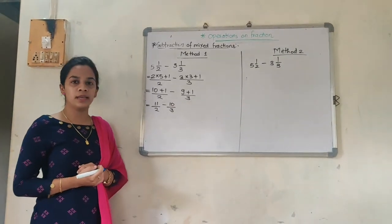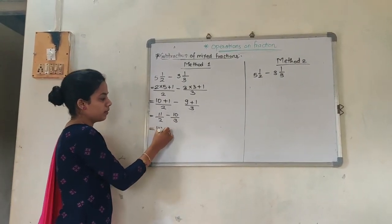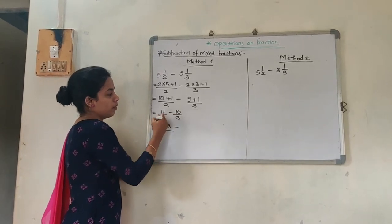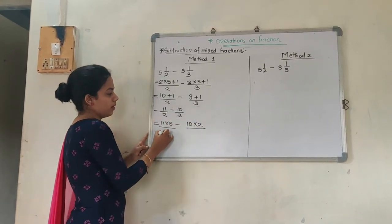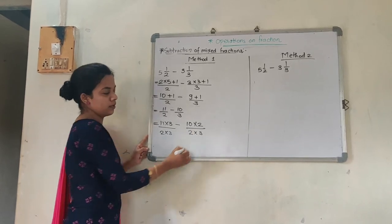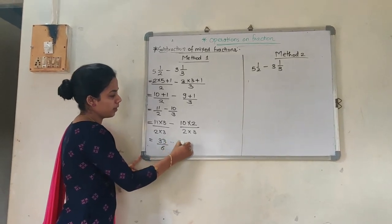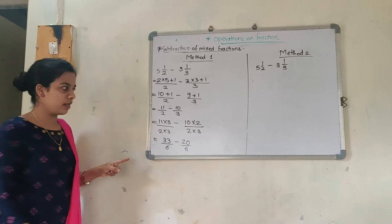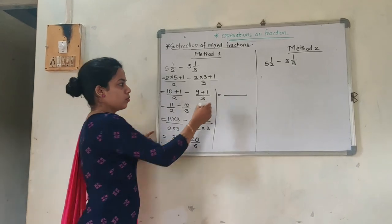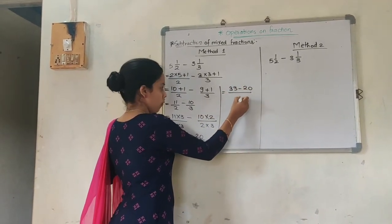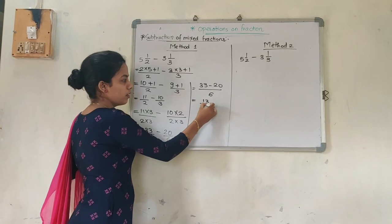Now just see — are the denominators the same? No, they are not. So we are going to cross multiply: 11 into 3 minus 2 into 10, whole divided by 2 into 3. That gives 33 upon 6 minus 20 upon 6. Denominators are the same, so we are going to subtract the numerators: 33 minus 20 upon 6, which is 13 upon 6.